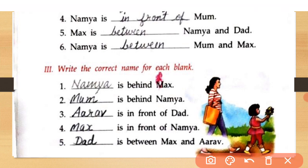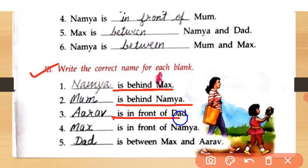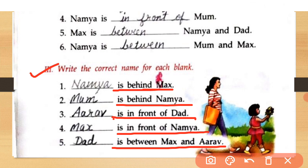Question number three: write the correct name for each blank. Who is behind Max? Namya. Who is behind Namya? Mum. Who is in front of Dad? Arv is in front of Dad. Who is in front of Namya? Max is in front of Namya. Who is between Max and Arv? Dad is between Max and Arv.